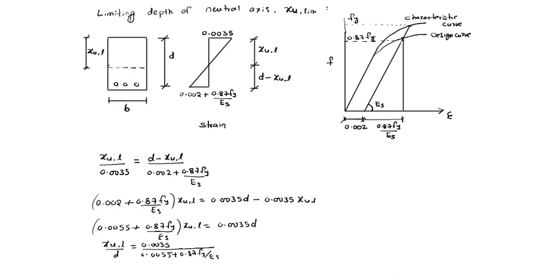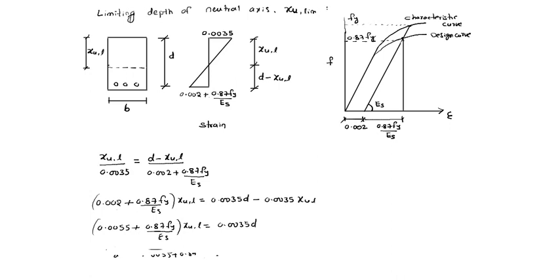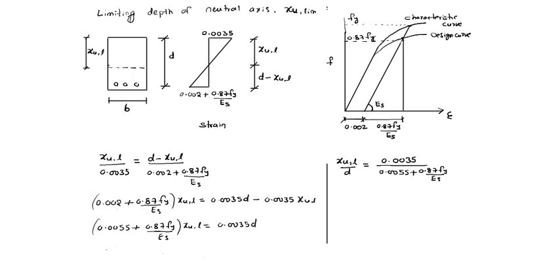This is the formula for XU limiting by d. So XU limiting by d equals 0.0035 divided by (0.0055 plus 0.87 FY by ES). It depends on the grade of steel only — grade of steel and elastic modulus ES.